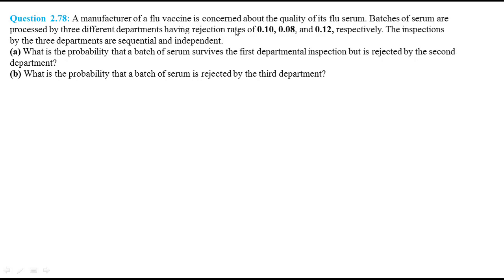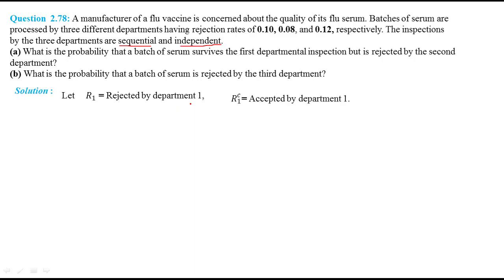Now consider problem 2.78: a manufacturer of flu vaccine is concerned about the quality of its flu serum. Batches of serum are processed by three different departments having rejection rates of 0.10, 0.08, and 0.12 respectively. The inspections by the three departments are sequential and independent — this is a very important concept. Part A asks: what is the probability that a batch of serum survives the first department inspection but is rejected by the second department? Let R1 be the event that the serum is rejected by department 1, and R1 complement be the event that the serum is accepted by department 1. R2 is rejected by department 2, and R2 complement is accepted by department 2.